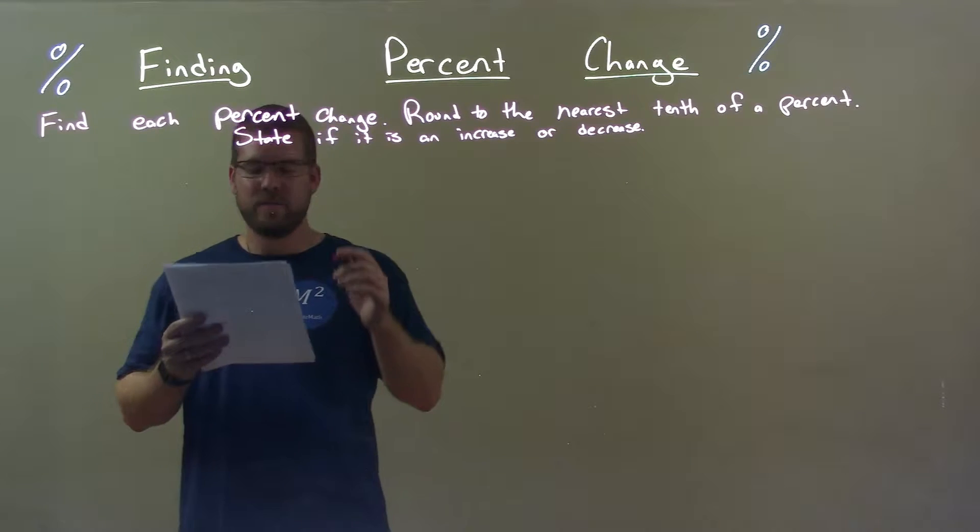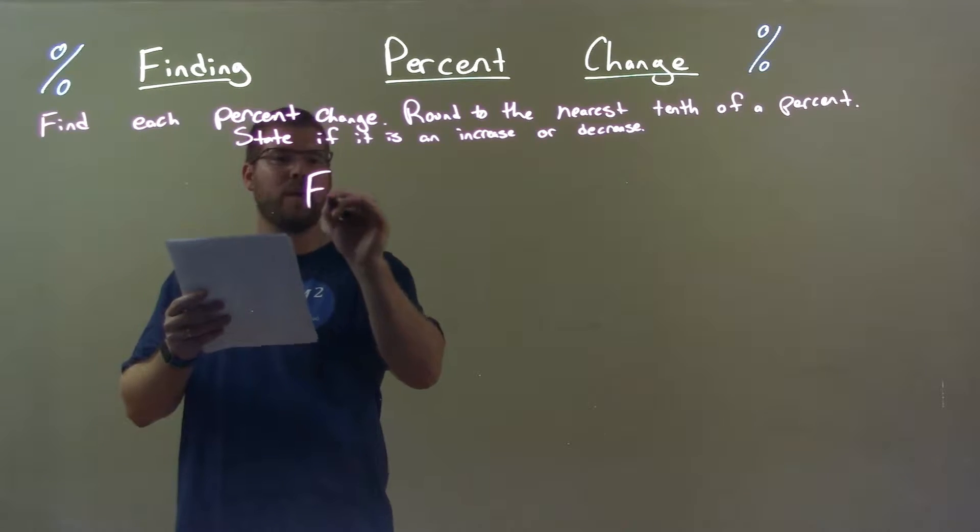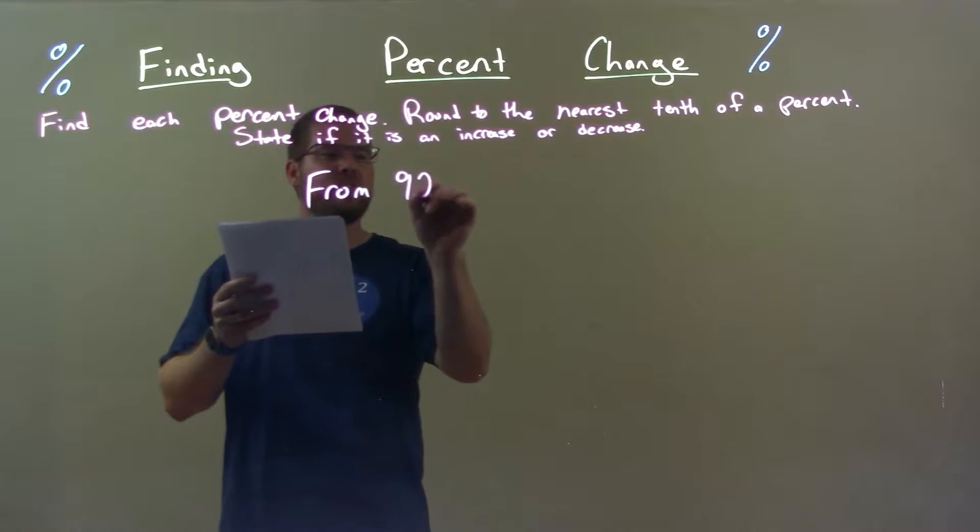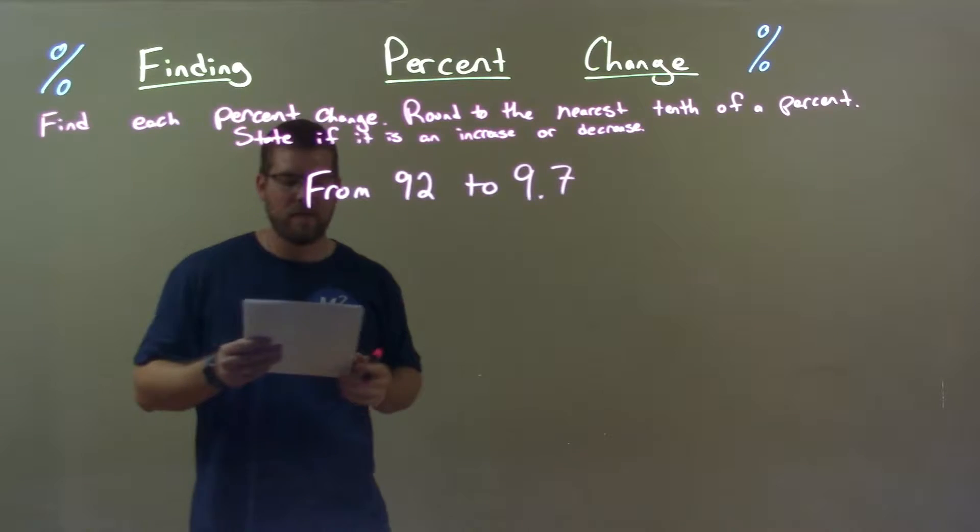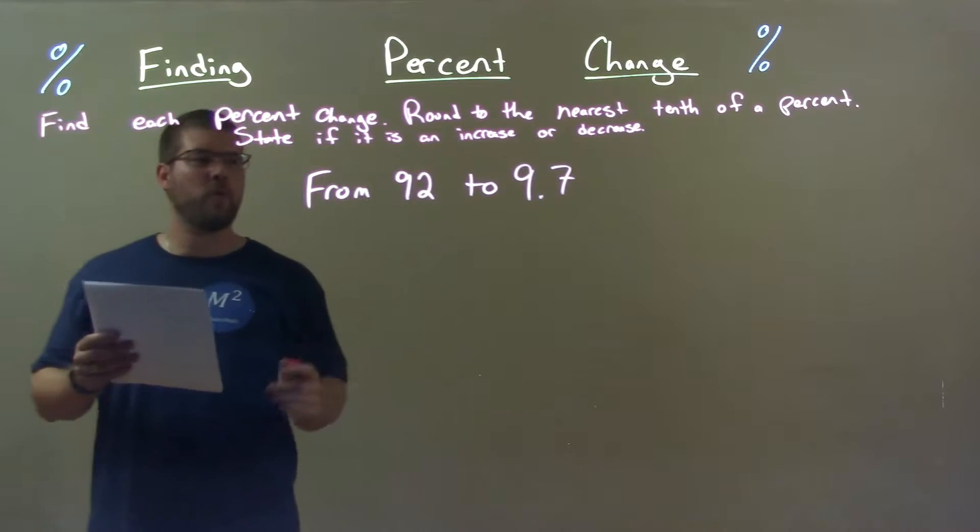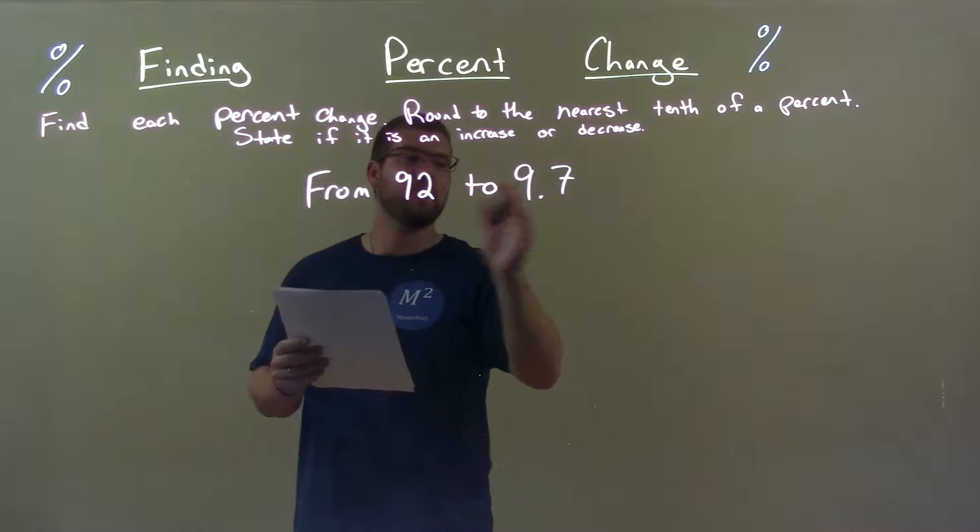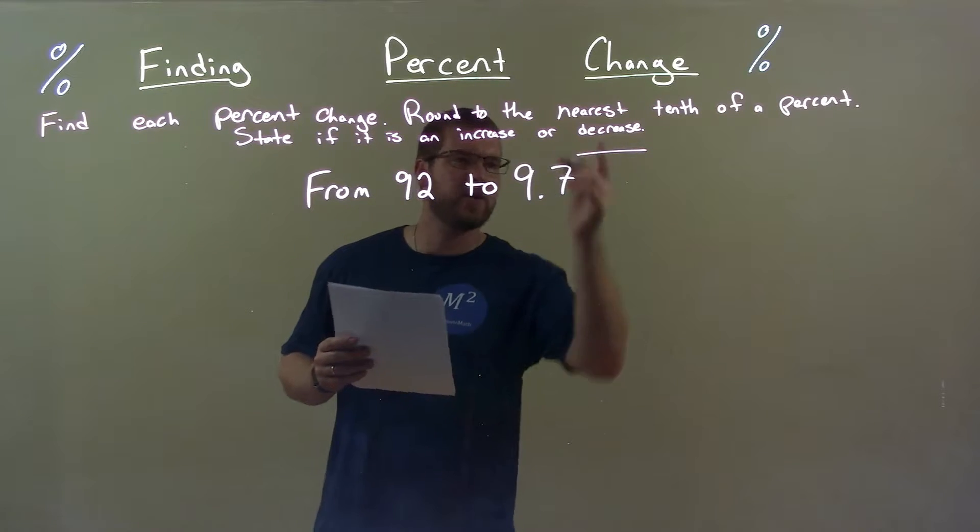If we're given these numbers of this problem from 92 to 9.7, don't forget that decimal 9.7. First step: find the difference. Well, first of all, is this an increase or a decrease? It is a decrease.